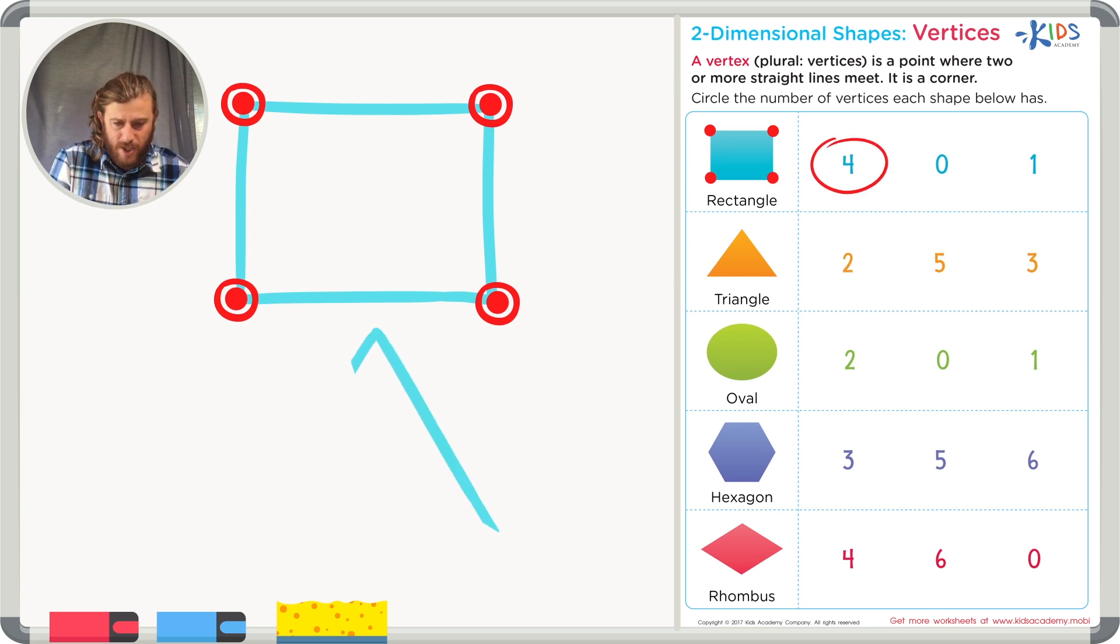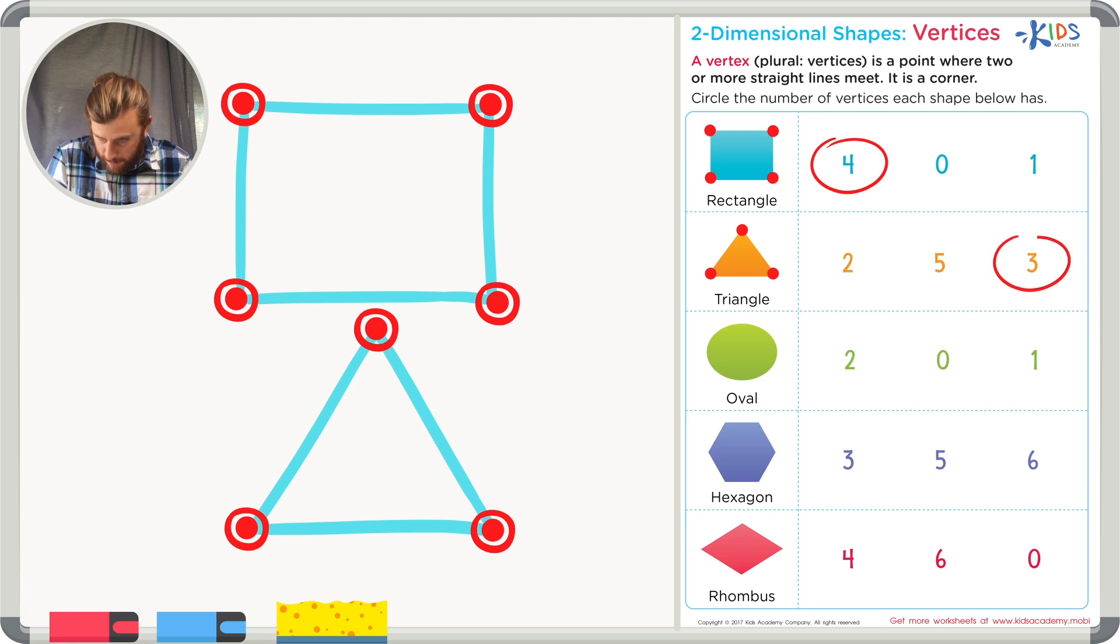Our next shape is a triangle, just like we looked at before. Do you remember how many vertices a triangle has? If not, it's okay. Let's just count again. I see one corner, where two lines meet. Another corner, that's two. And finally, three, a third corner. I think there are three vertices, but let's just count on our worksheet to be sure. One, two, three vertices. Let's circle the number three.